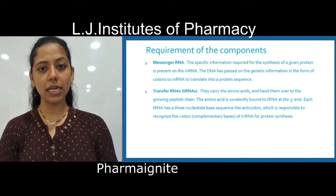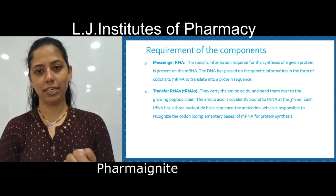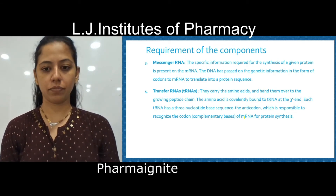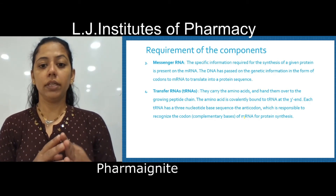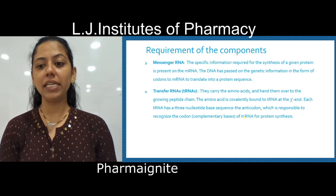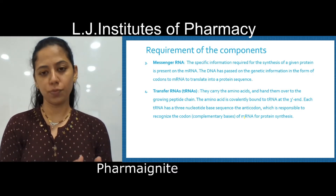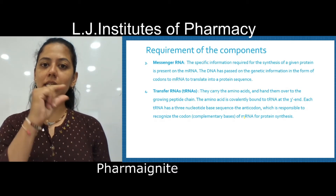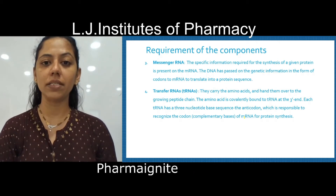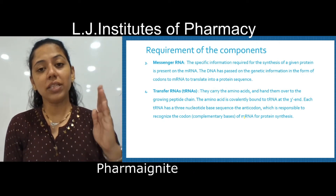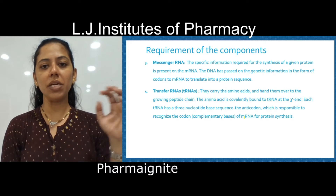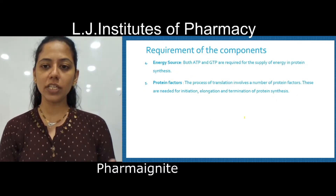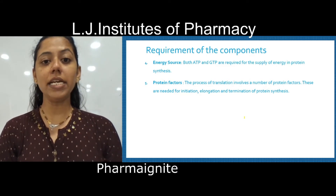This tRNA carries amino acids and hands them over to the growing peptide chain. The amino acids are covalently bound with the tRNA at the 3' position. In the structure of tRNA, we have the CCA nucleotide base sequence at the 3' end, and to that sequence this amino acid covalently binds.